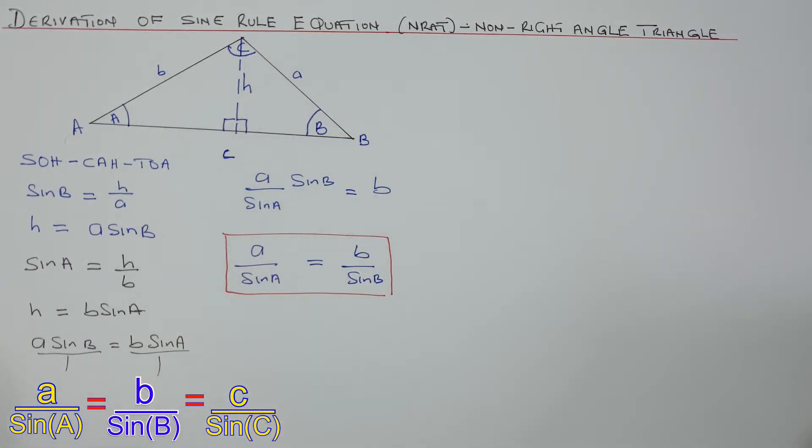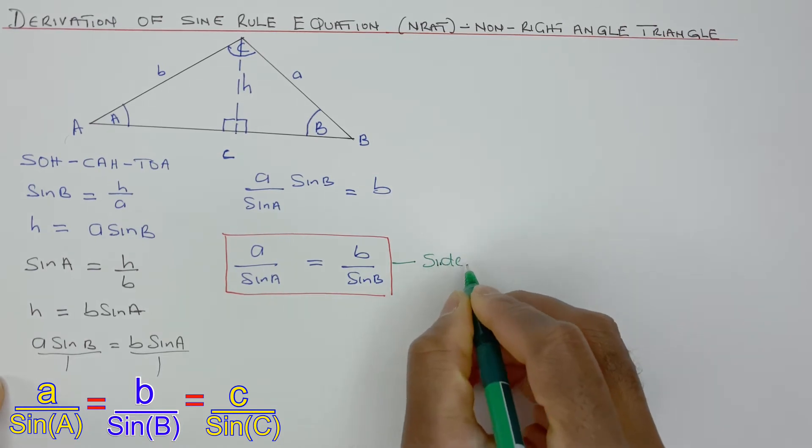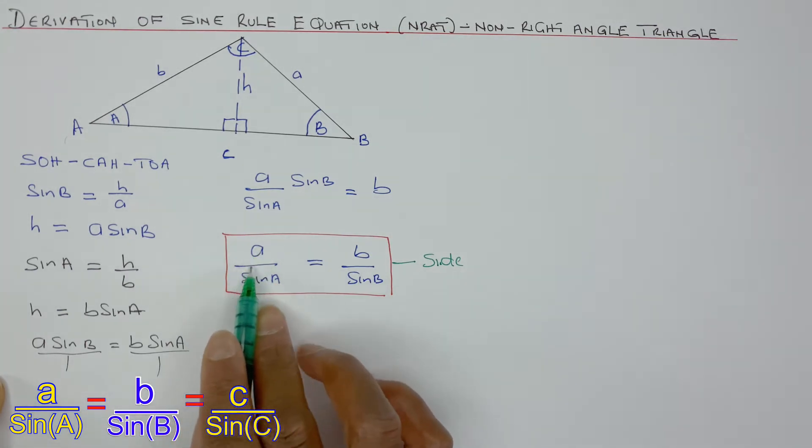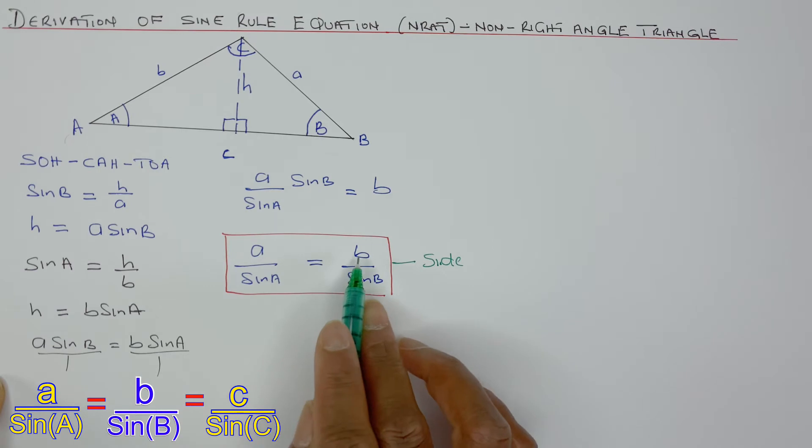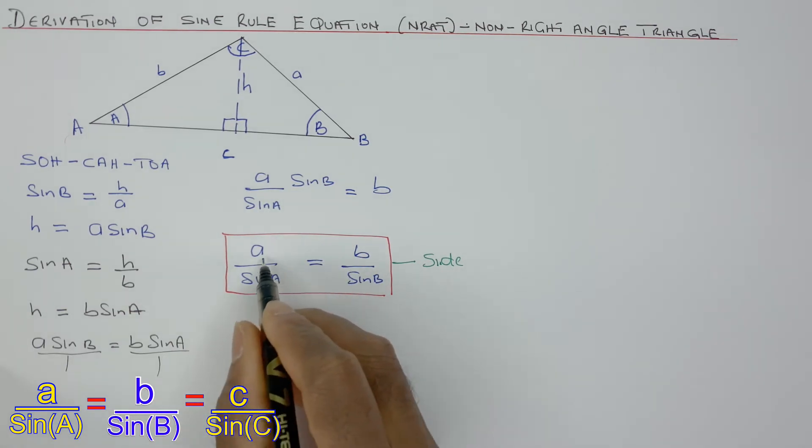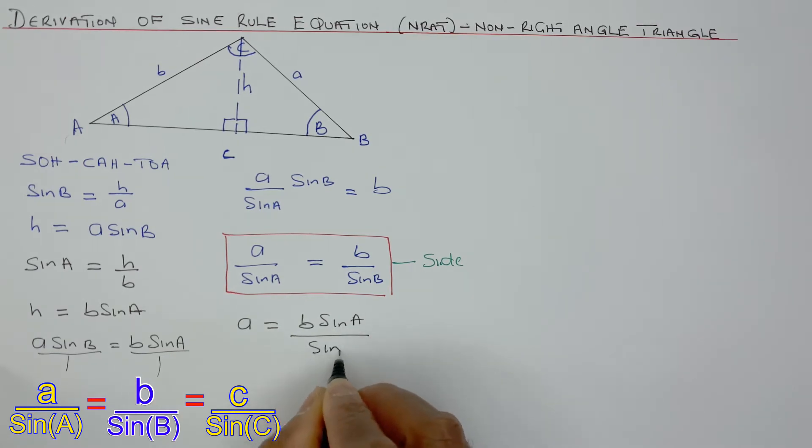And this formula is used to find the side. If you want to find the side in a non-right angle triangle, it's best to use A, the side over the angle of A, equals side B over the angle of B. To find side A, just take sine A to that side. So A will become B sine of A over sine of B.